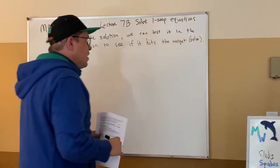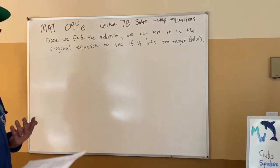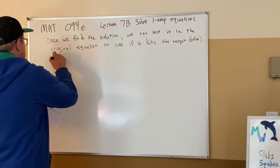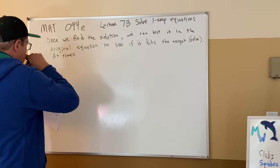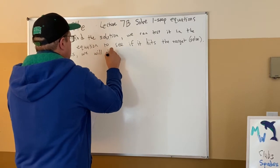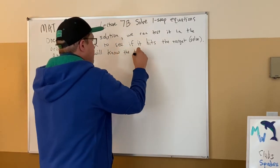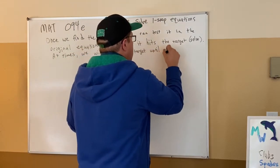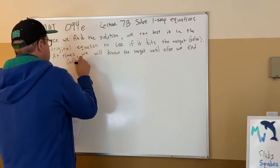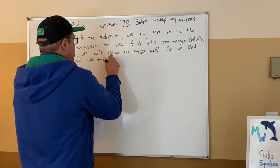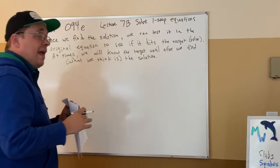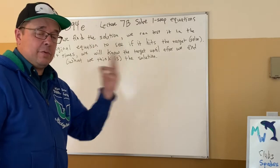In some one-step equations and multiple-step equations, the target will be visible right at the beginning of the problem. In other cases, the target may be hidden and we will not know it until after we find what we think is the solution. Because if we made a mistake, then we're wrong, and we'll know because the goal is to have both sides equal the same number.